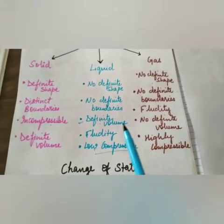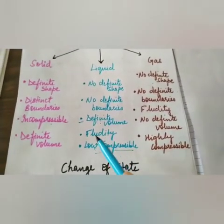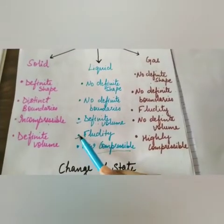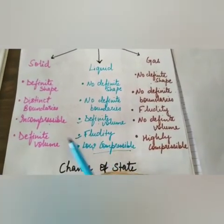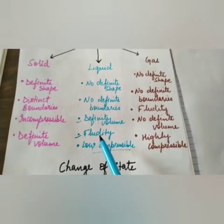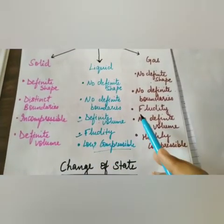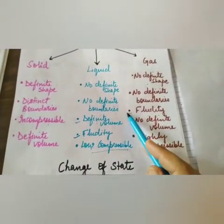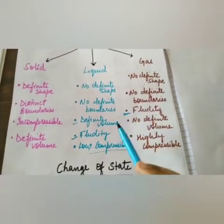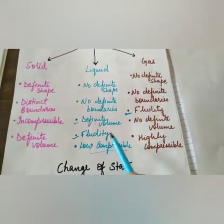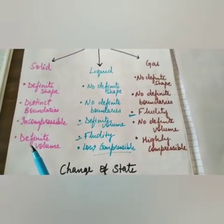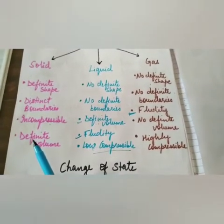One more important point: liquid has fluidity — it can flow, but solid cannot flow. Gas also has fluidity and can flow. So liquid and gas have fluidity, but solid does not have fluidity and cannot flow.